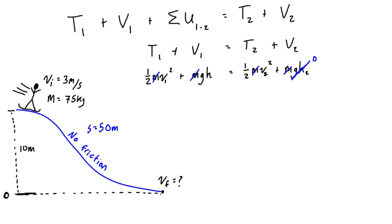So it's all going to drop off. So we can fill in the values that we do have left over. So we have one-half v1 squared, that is 3 meters per second, all squared.